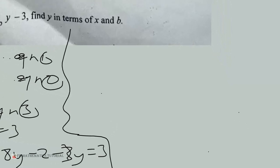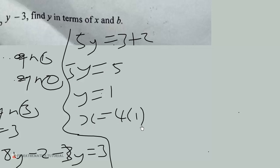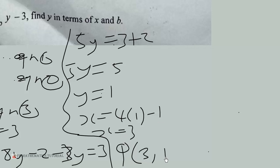Continuing the solution: 8y minus 3y gives 5y, minus 2 equals 3, so 5y equals 5, which means y equals 1. Then x equals 4 times 1 minus 1, which is 3. So the coordinates of Q are (3, 1).